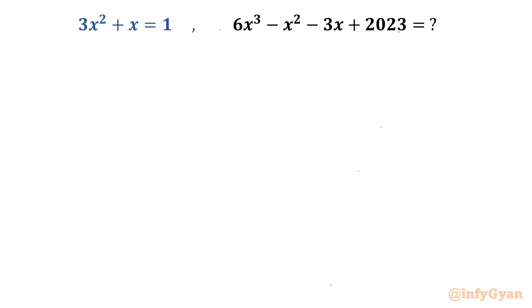Now let us take up the second problem. If 3x square plus x equal to 1, then we have to evaluate this expression value. Now how will you proceed? If 3x square plus x equal to 1, then we can write 3x square plus x minus 1 equal to 0. Take all the terms to left.